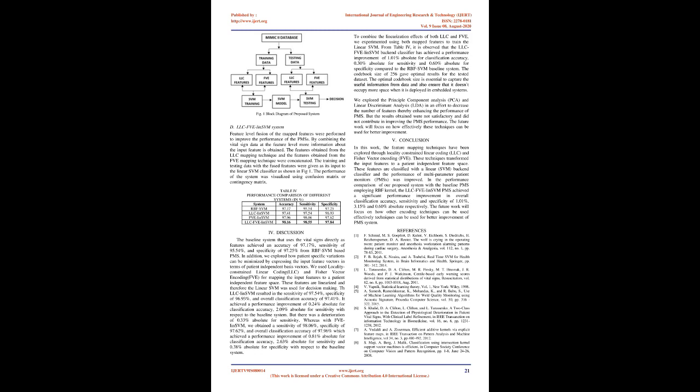FVE experiments were performed by increasing the number of clusters from 8 to 512. Table 3 lists the results of the FVE-LINSVM system for different cluster sizes, and it was observed that 256 cluster size gave the best performance. For the LLC-FVE-LINSVM system, feature-level fusion of the mapped features was performed to improve PMS performance. By combining the vital sign data at the feature level, more information about the input features is obtained. The features from LLC mapping and FVE mapping were concatenated, and the fused features were given as input to the linear SVM classifier as shown in Figure 1. The performance was visualized using a confusion matrix.